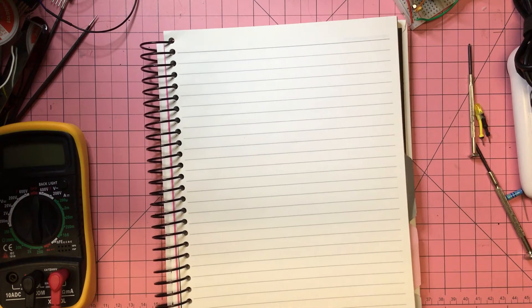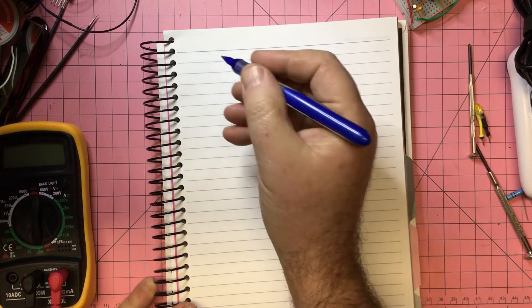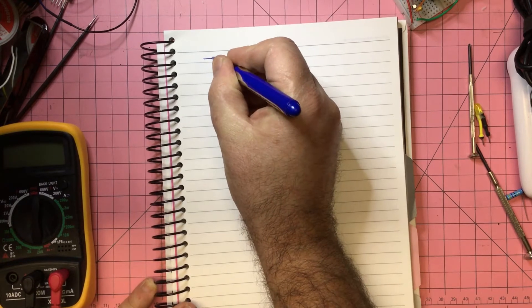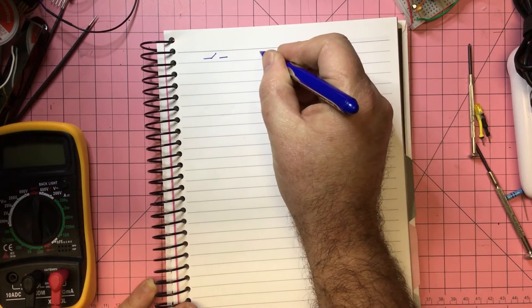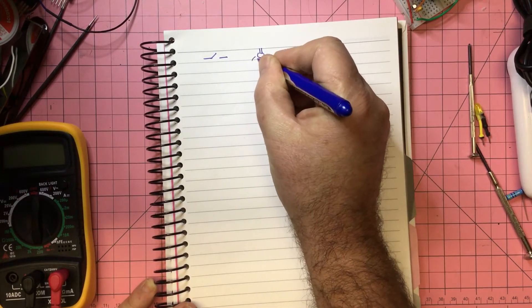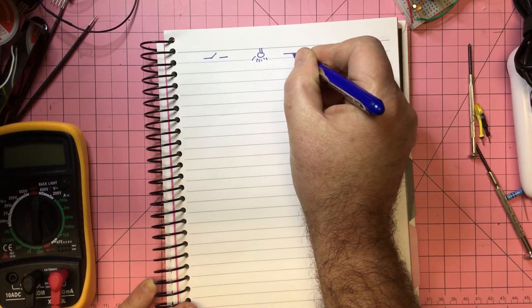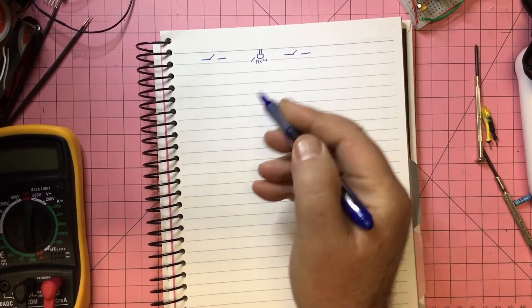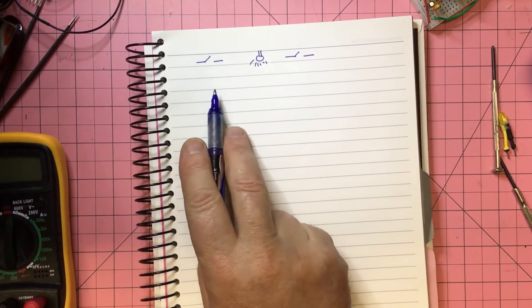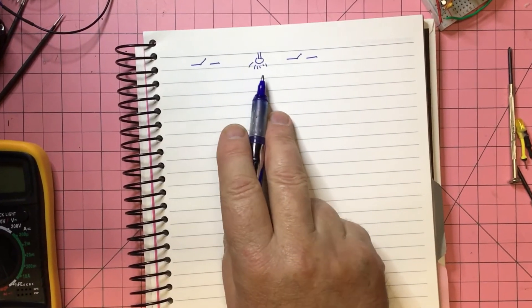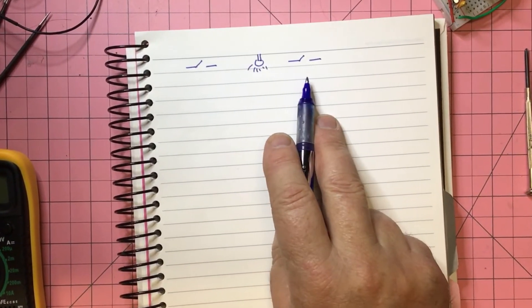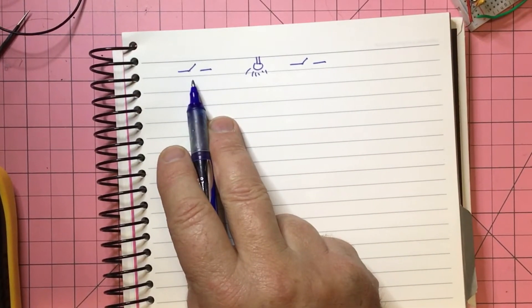So we have a scenario where we've got a switch and we've got a light bulb and another switch. So you walk into a room, let's say a bedroom, and you flick the switch, light goes on. You jump into bed and then you realize you have to get up to turn this switch off again.